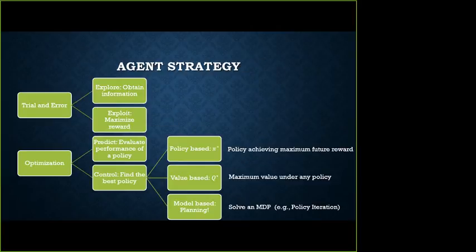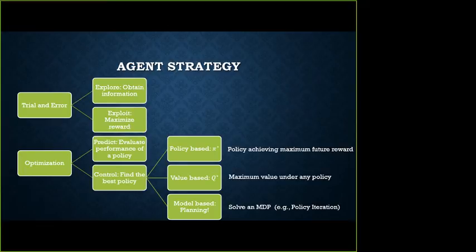So whatever objects — policies, value functions, or a reverse-engineered model of the environment — the agent can maintain one of these three things. But the strategy by which the agent figures out how to maximize its total reward is trial and error. Sometimes you need to explore, and sometimes you need to exploit to actually maximize the total reward collected. When I say explore, you have to obtain information — in some states you don't know the value or whether taking action A will lead to death or not.